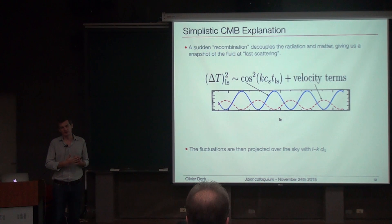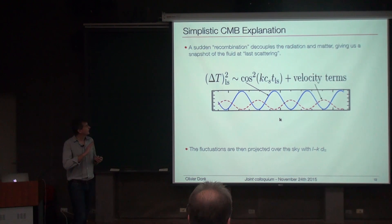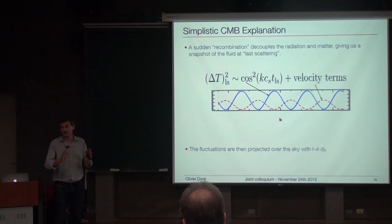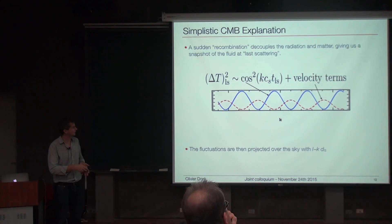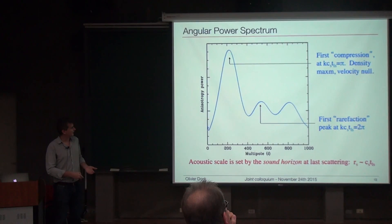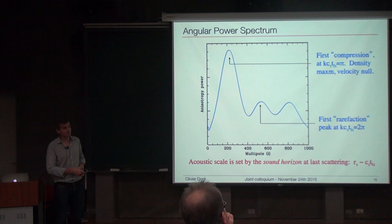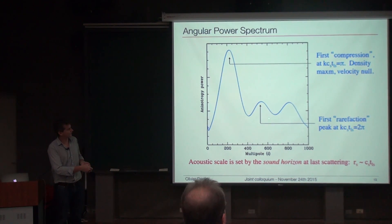You have a set of initial acoustic fluctuations, and what happens at the time of recombination — when the universe becomes neutral — the CMB decouples; radiation and matter are suddenly decoupled. This gives us directly a snapshot of the fluctuations at the time of recombination, which is what you see here. These fluctuations become projected on the sky. The large first peak corresponds to the first compression peak, which occurs when K·c_s·t at recombination equals π. Then you have the first rarefaction, and then compression again.